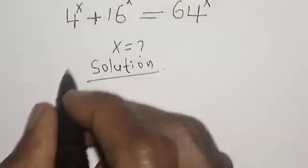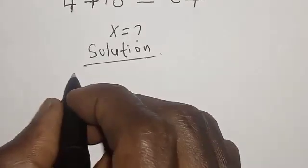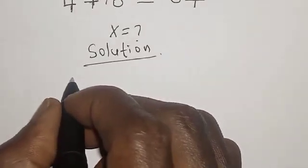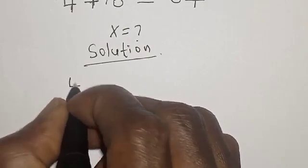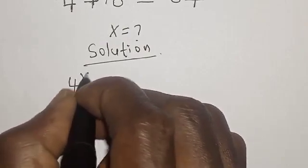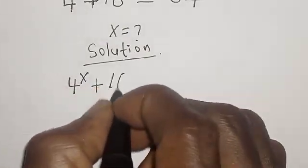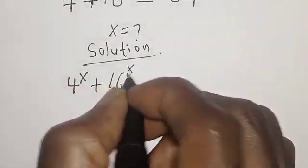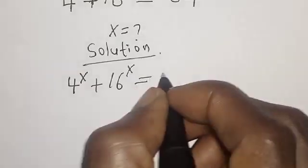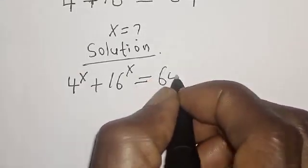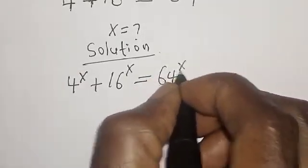Solution. The equation given is: 4 raised to power s plus 16 raised to power s is equal to 64 raised to power x.